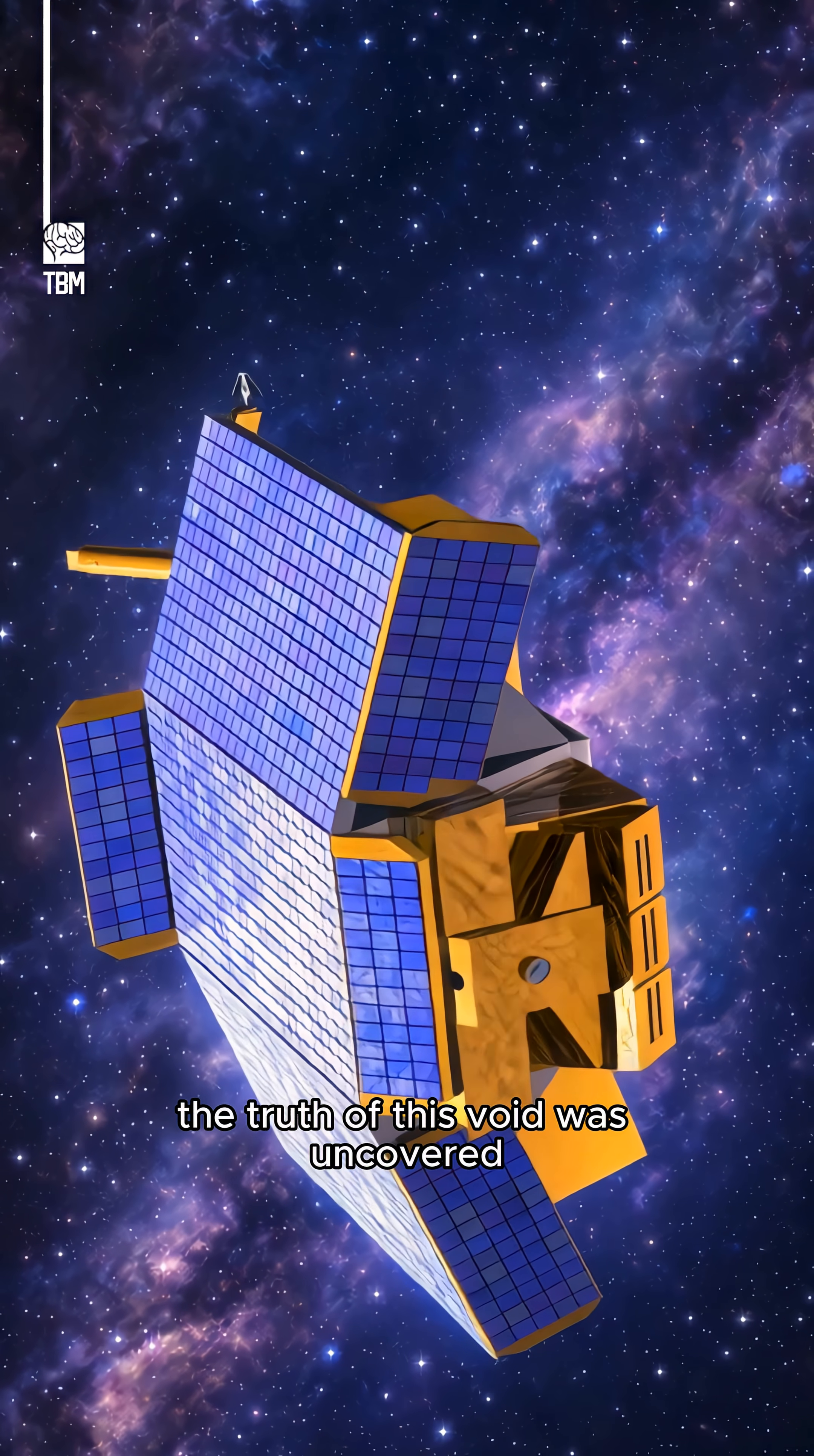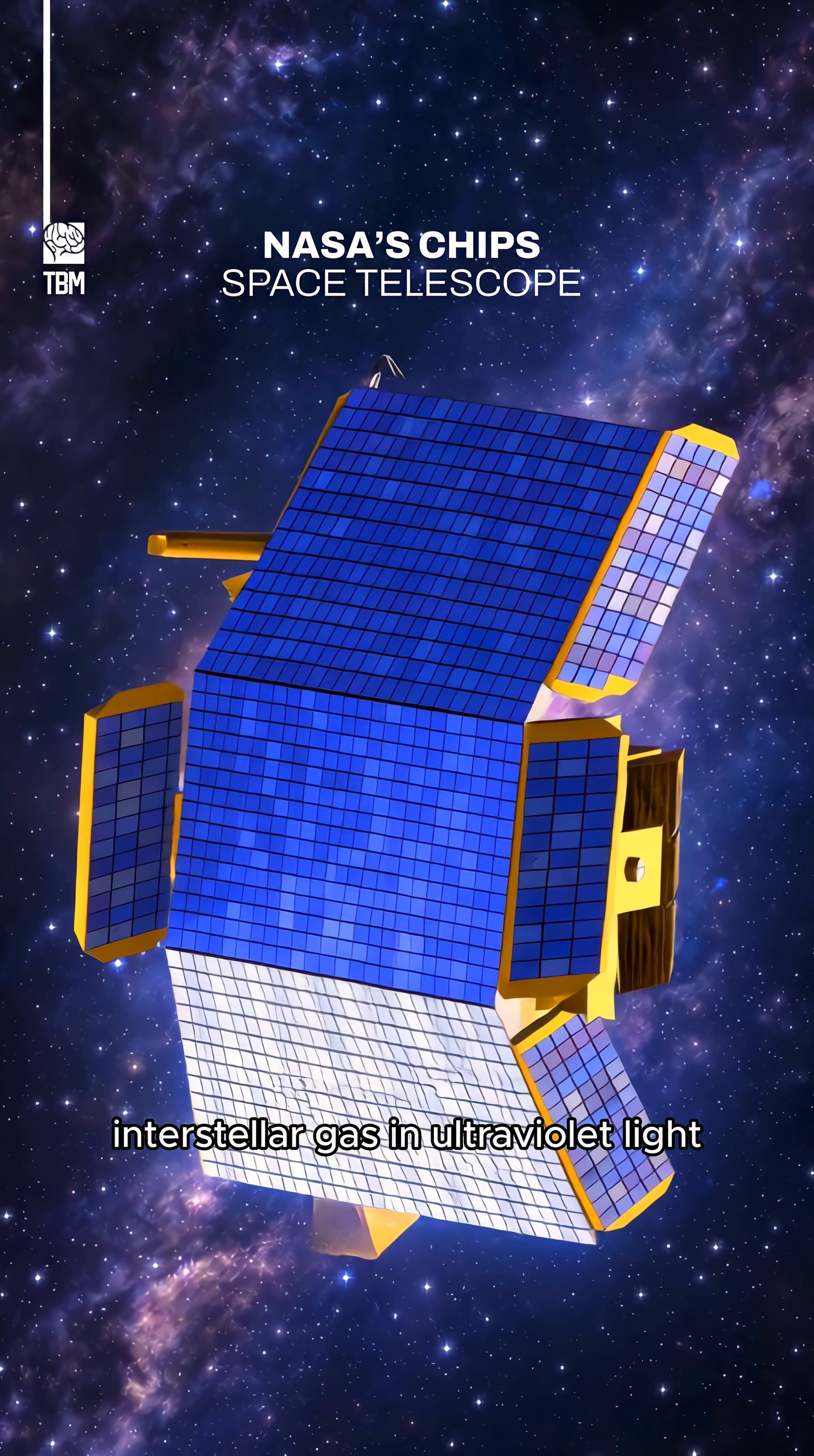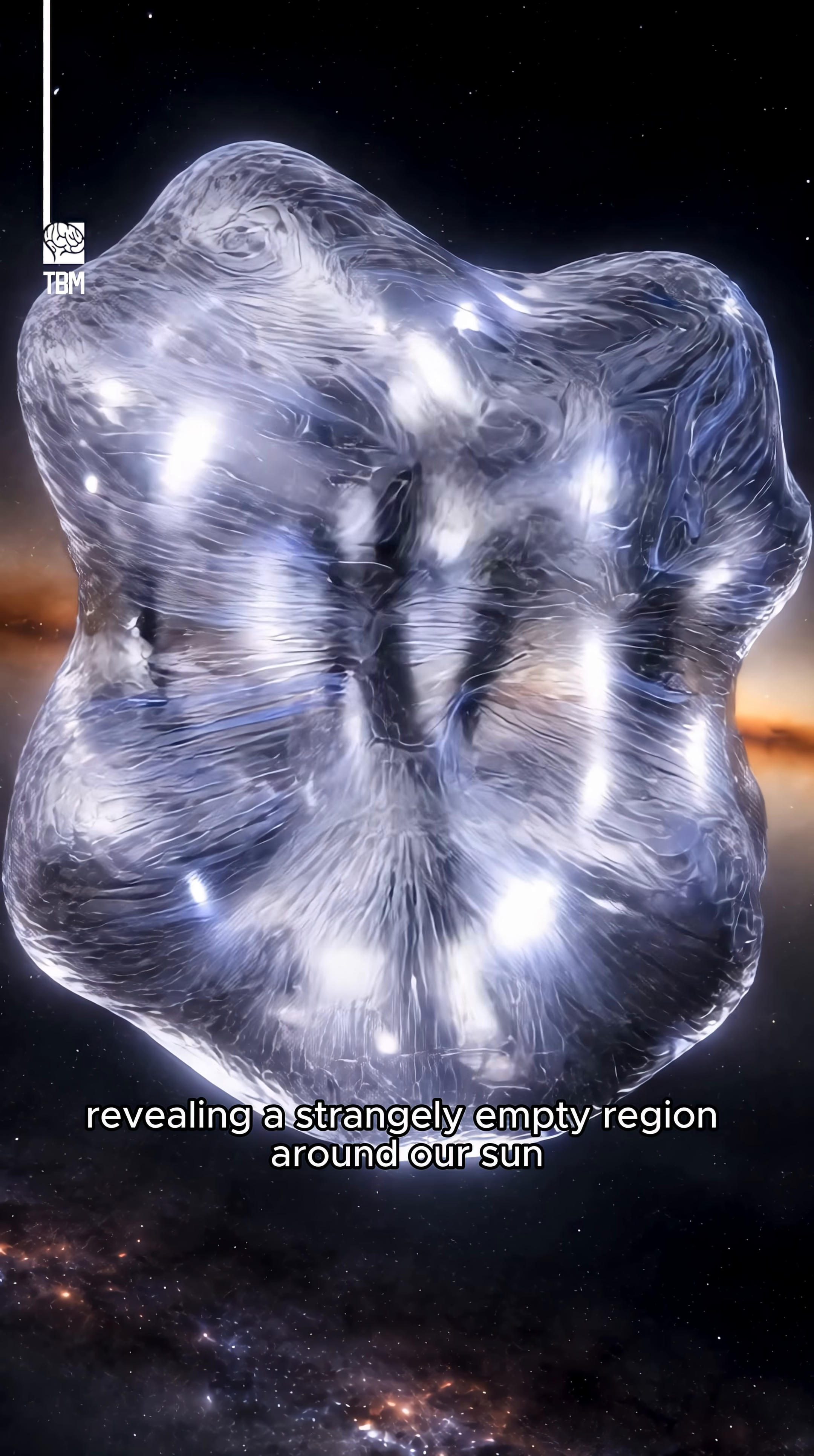The truth of this void was uncovered when NASA's CHIP space telescope searched for glowing interstellar gas in ultraviolet light and found almost nothing, revealing a strangely empty region around our sun.